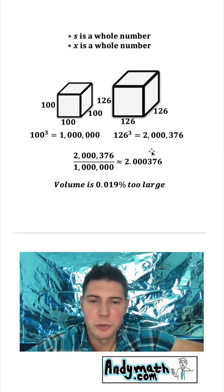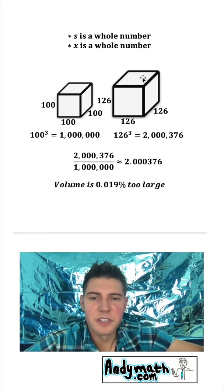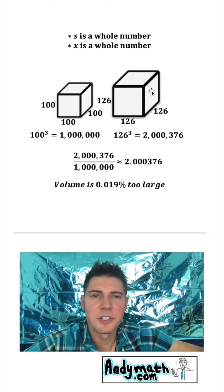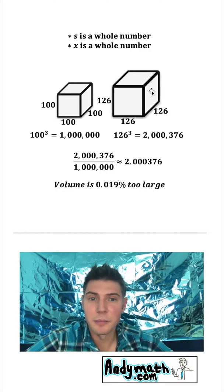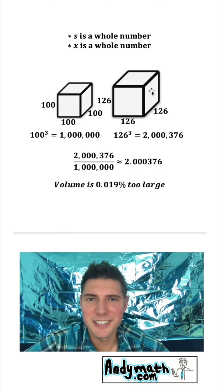It's approximately 2.000376. So this volume is now 0.019% too large. It's really close. That's a tiny amount. It's very close, but it's still not exactly double.